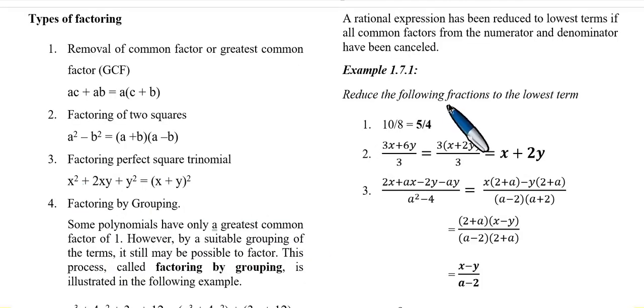A rational expression has been reduced to lowest terms if all common factors from the numerator and denominator have been cancelled. So you will simplify the rational expression. For example, reduce the following fractions to the lowest terms. First, simpleng 10 over 8 lang.